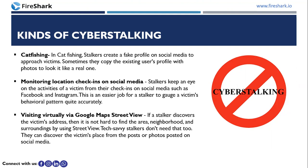The next kind is monitoring location and check-ins on social media. Stalkers keep an eye on the victim's online activities, checking their social check-ins on Facebook and Instagram — what posts they make and what time they are online. This makes it easier for a stalker to track a victim's behavior pattern. Another kind is visiting virtually via Google Maps Street View. If a stalker discovers the victim's address, it is not hard to find the area, neighborhood, and surroundings. Stalkers can also discover the victim's location from posts or photos shared on social media.